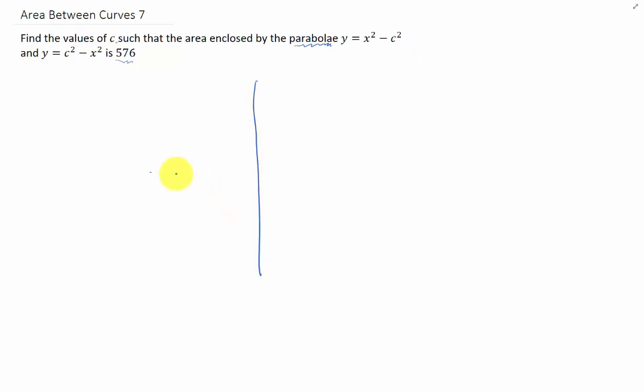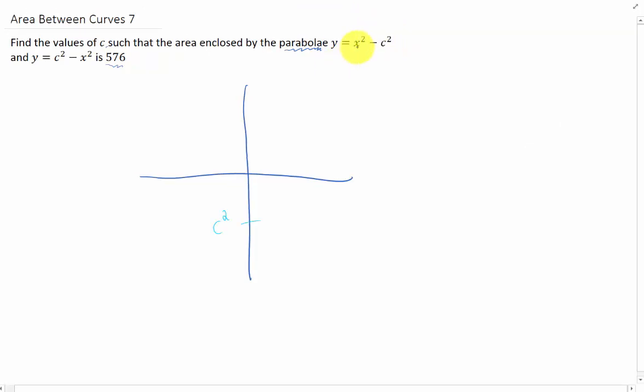A sketch is a nice idea. I don't know what C is, but if you have C squared, that's gonna be a positive number. We're subtracting a positive number off of X squared. That is going to shift a parabola down C squared units. It's upward opening, so it'll look something like that.